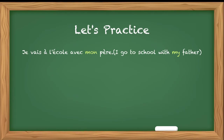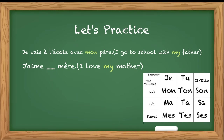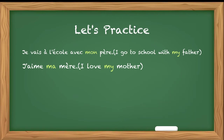Let's see one more example: 'J'aime ___ mère' — I love my mother. Now mother is feminine singular. Coming back to the table, what will be used with feminine singular is ma. So ma mère — J'aime ma mère.